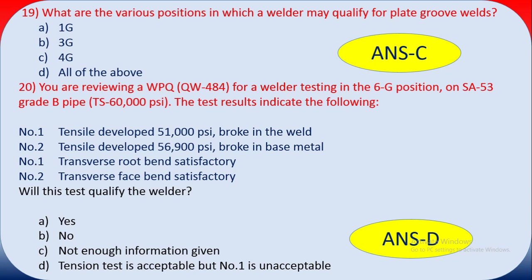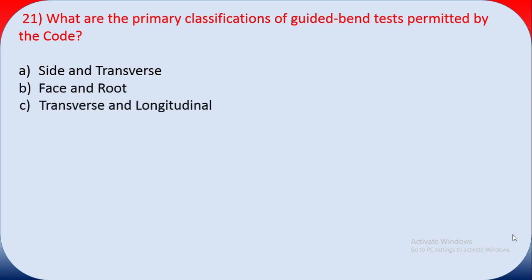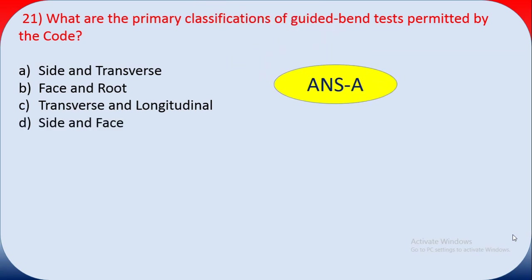Question twenty-one: what are the primary classifications of guided bend tests permitted by the code? Options: side and transverse, face and root, transverse and longitudinal, side and face. The answer is A — side and transverse are the primary classifications of guided bend tests.